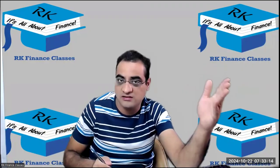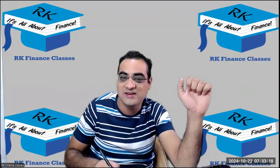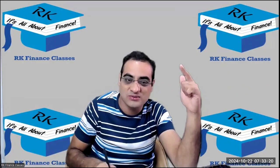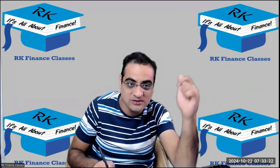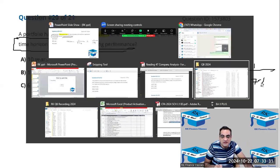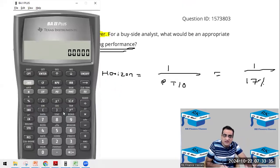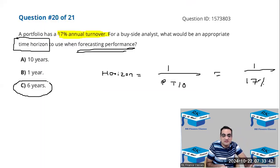The formula I was asking - how many had seen that formula? I'll show you that. Horizon equals 1 upon portfolio turnover, so it becomes 1 upon 17 percent. So let's do it - 1 upon 17 percent, that is 5.88, close to six years. I'll just open that chapter.